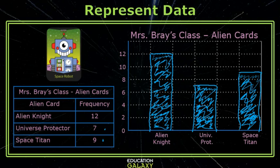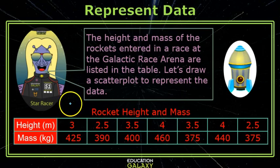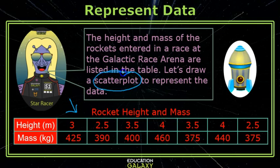Star Racer, it is your turn. Hey dudes! The height and mass of some rockets entered in a race at the Galactic Race Arena are listed in the table. We're going to use this data to make a scatter plot. Yes, I said a scatter plot.